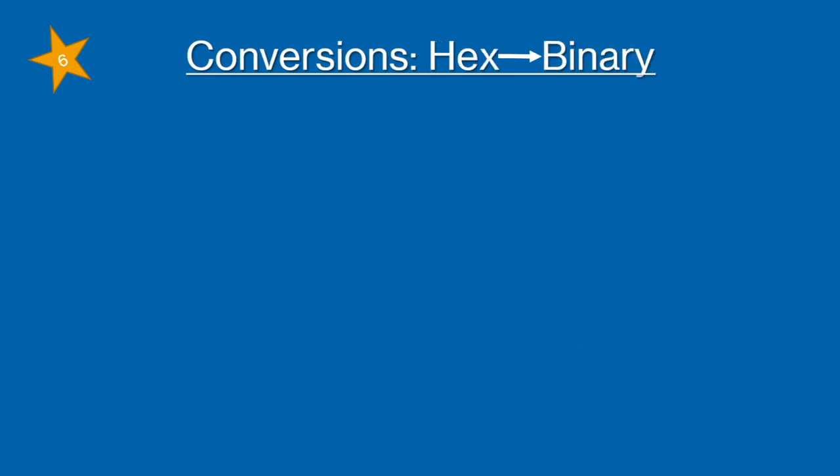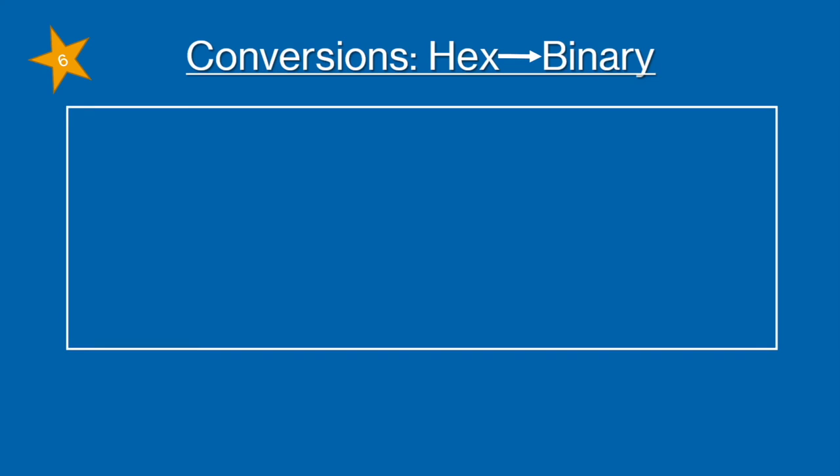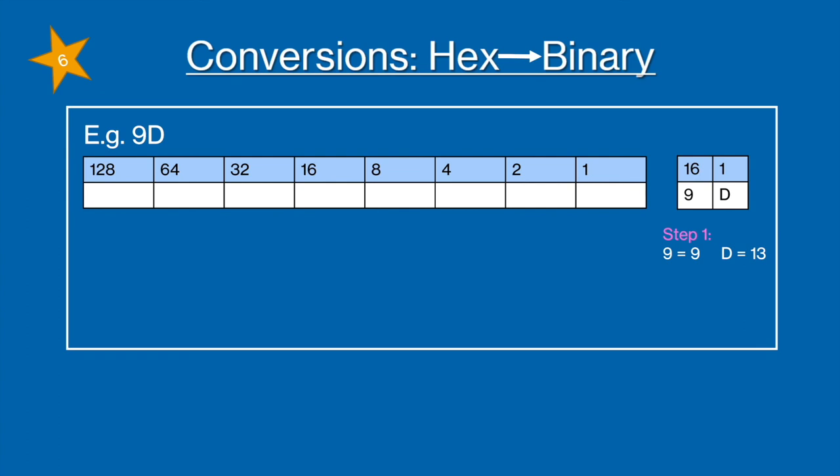Okay the last conversion we're going to look at is hexadecimal to binary and we're going to use 9D as our example. So first you're going to create your hexadecimal table of 9D and you are going to for your first step change them into denary values. So 9 equals 9 and D equals 13. Next we're going to have a binary table and we're going to split it in the middle so every four columns.